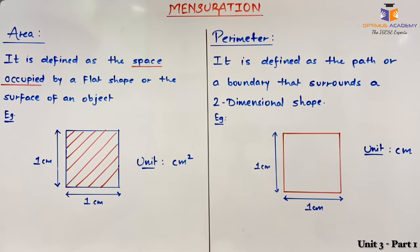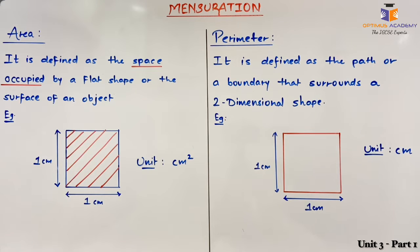In the first part of the video we are going to discuss about area and perimeter. Area is defined as a space occupied by a flat shape or the surface of an object. By flat shape we mean a 2D object. Most of the area sums will be based on 2D objects and surface area sums will be based on 3D objects.